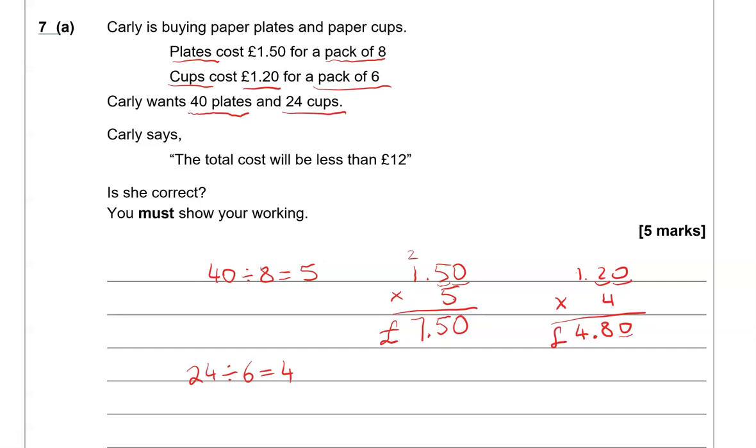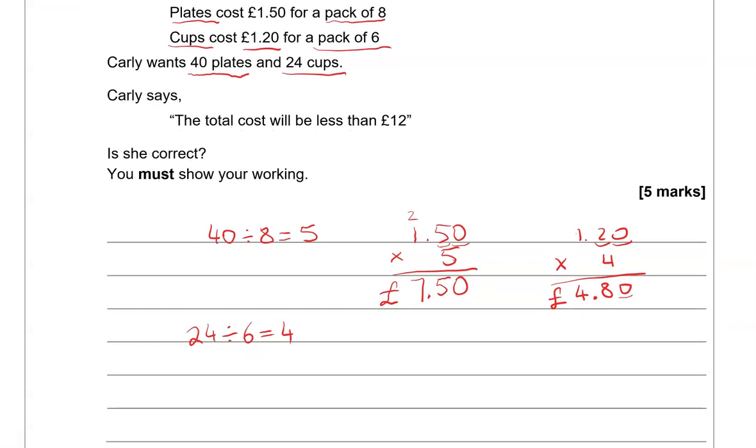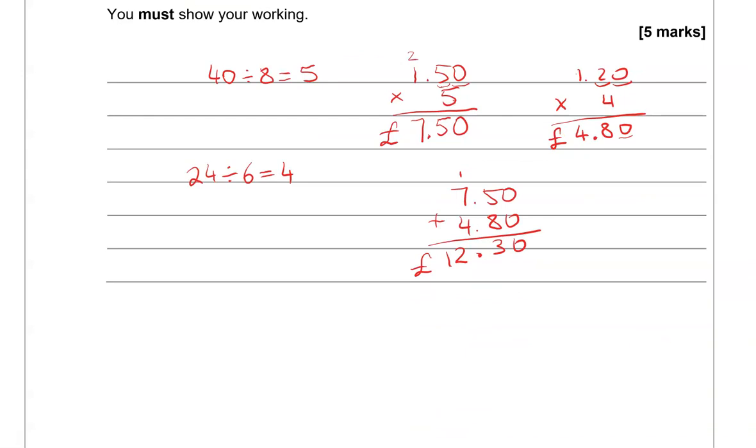Now she says that the total cost would be less than £12. Is that going to be the case? So 7.50 add 4.80. 0, 5 and 8 is 13. 7 and 4 is 11 and the 1 is 12. So £12.30 is not less than 12. So is she correct? I'm going to say no. So they cost more than 12 pounds.